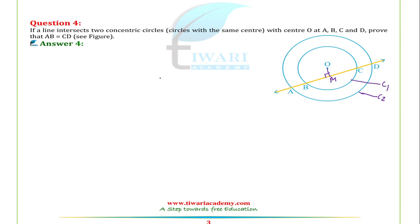BC is a chord of the smaller circle, such that OM is perpendicular to BC. Therefore, BM equals MC.